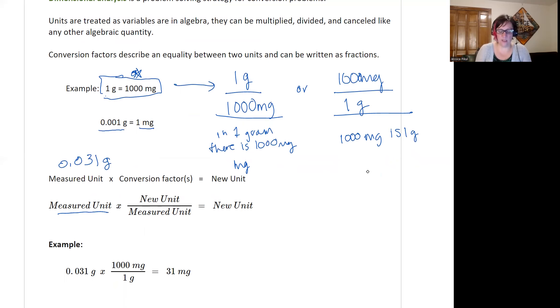And we're going to make sure that for our measured unit, the measured unit is on the bottom of our conversion fraction, and the new unit is on the top. So this would look like 0.031 grams times, we were going to want our new unit to be milligrams. So we're going to use this conversion factor here. So this will be times 1000 milligrams divided by one gram.